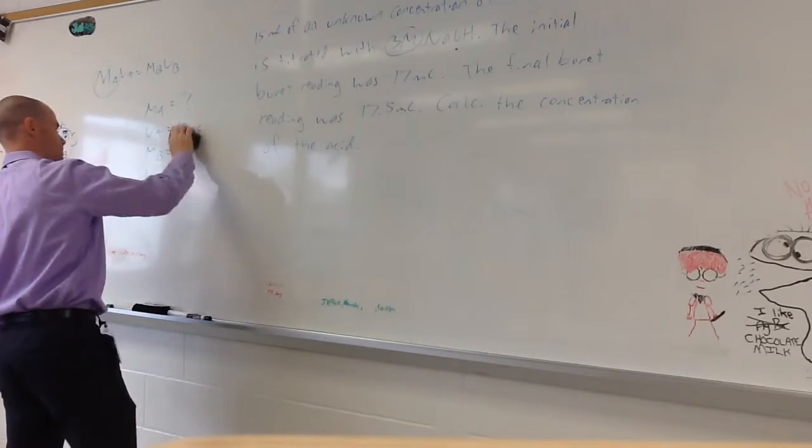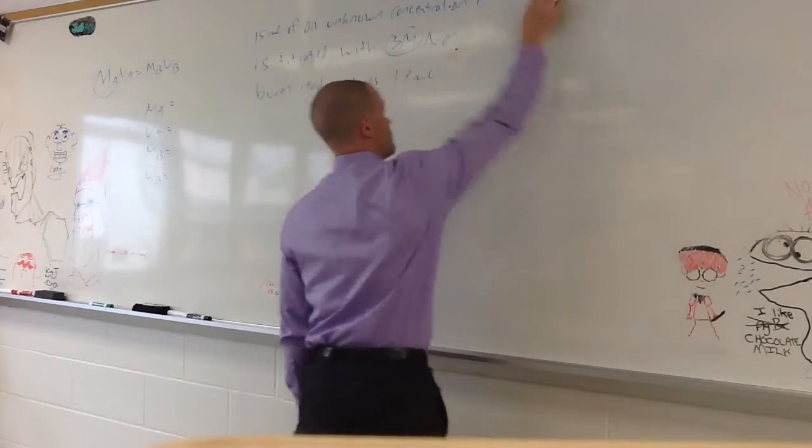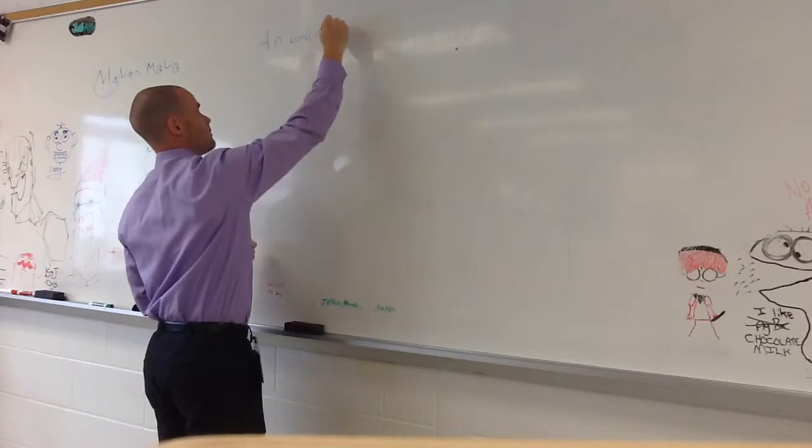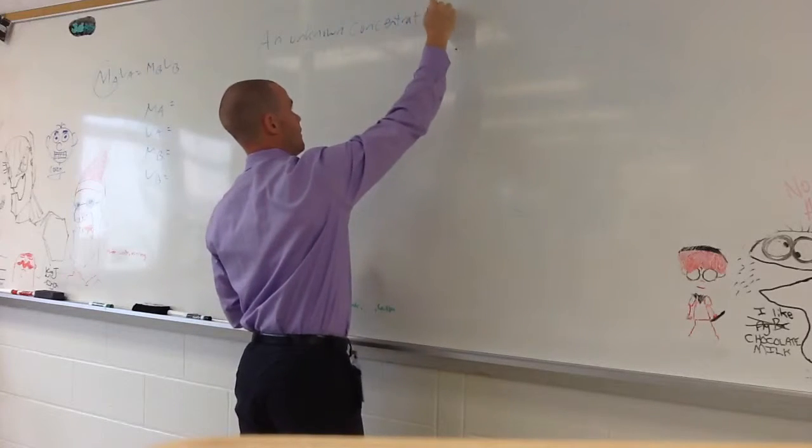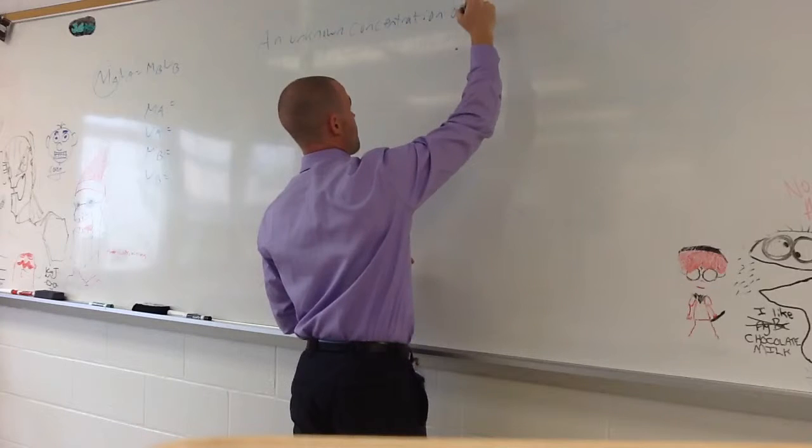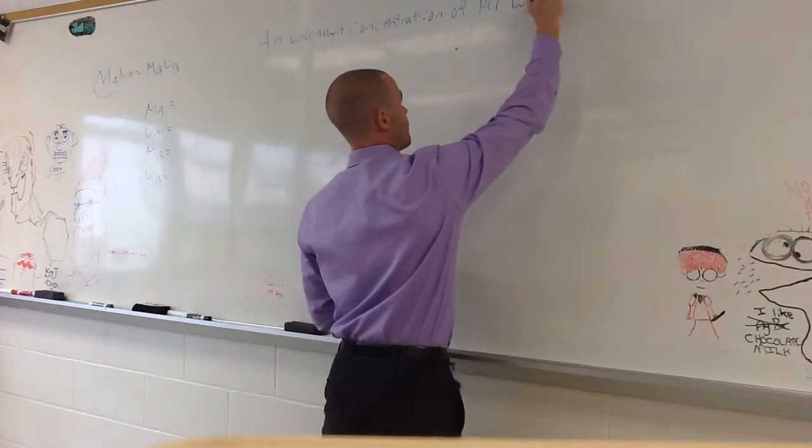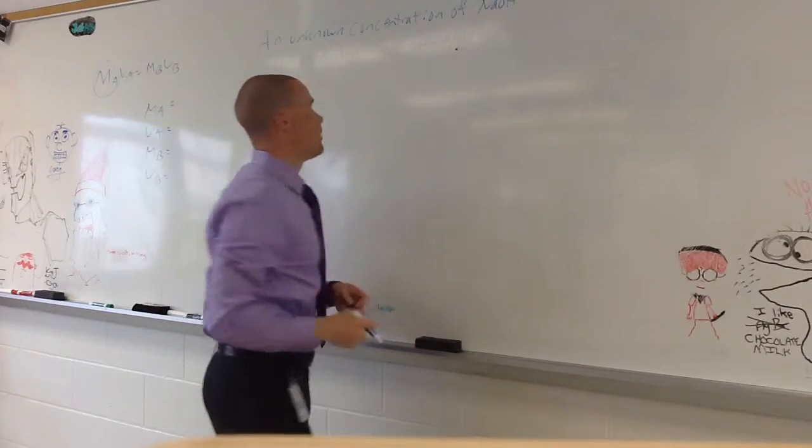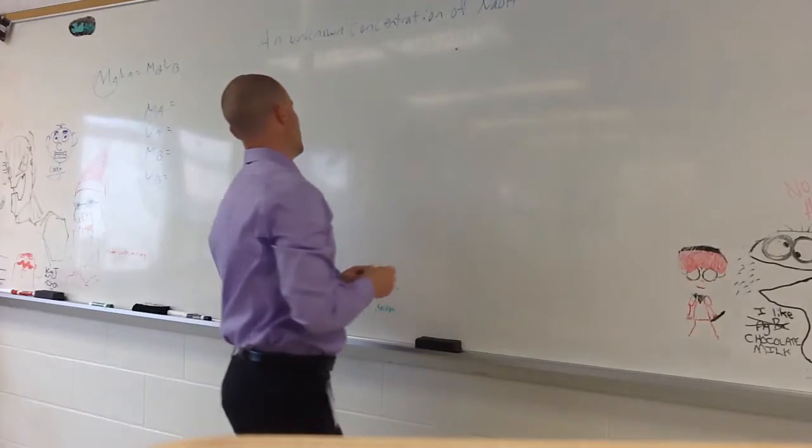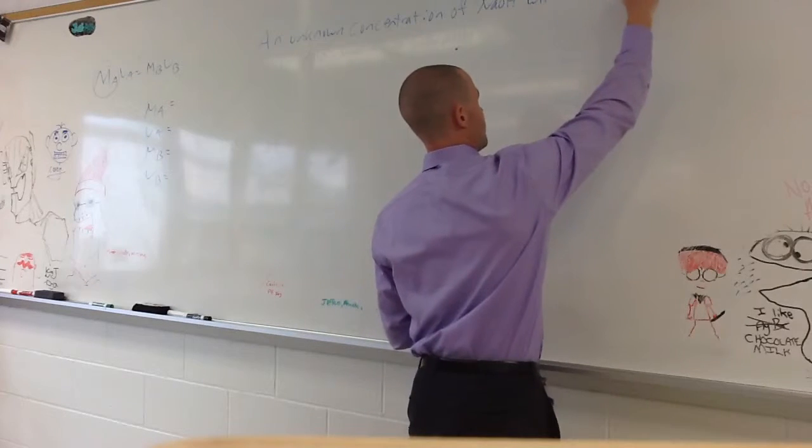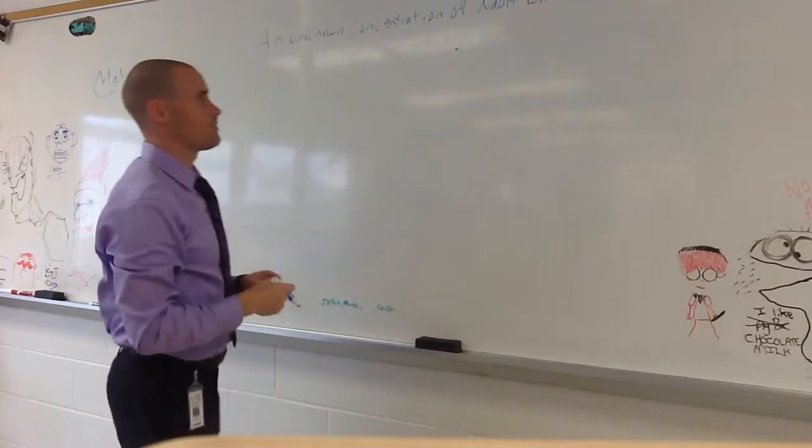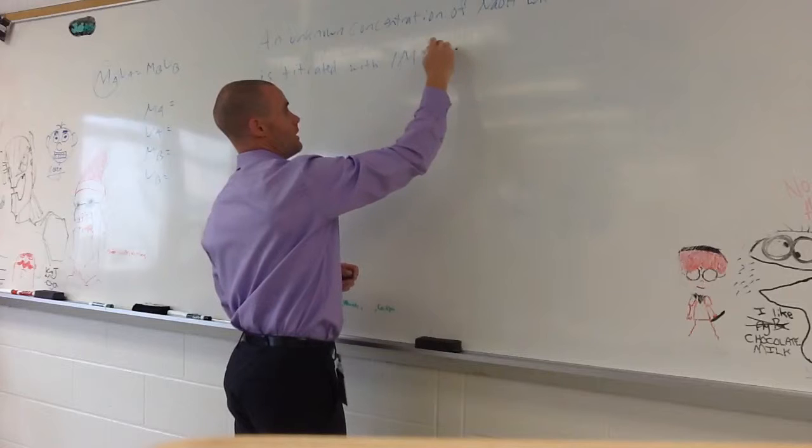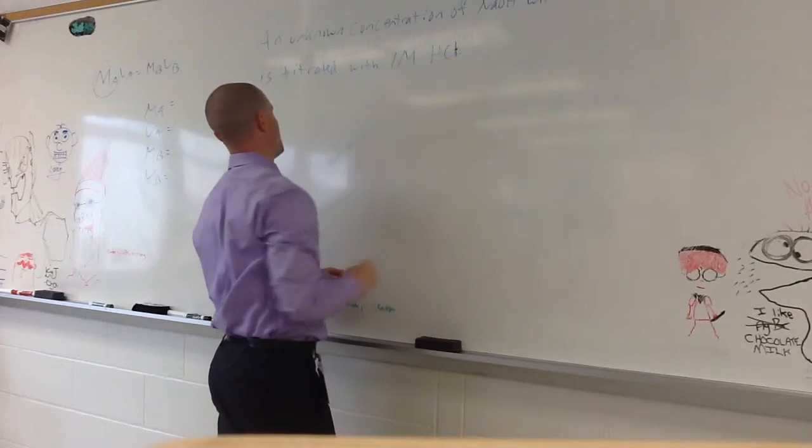I'm going to flip it though. I'm going to make it a little bit different. Same exact concept. Just ask it a little different. An unknown concentration. Yep. Write down the whole thing. An unknown concentration of, we'll just use HCl again, with—no, no. Let's do, let's use NaOH. An unknown concentration of NaOH. Sorry. I want to do it in reverse. An unknown concentration of NaOH, with a volume of 25 milliliters, is titrated with one molar HCl. Oh, I hit my little speed bump there. Is titrated with one molar HCl.